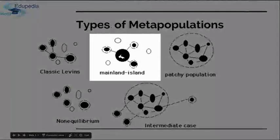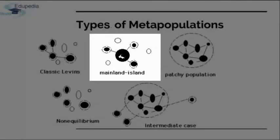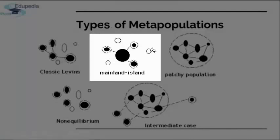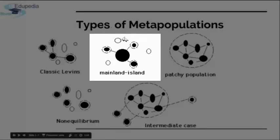The second is the mainland-island model. It represents a system of patches or subpopulations located near a large mainland patch. Dispersal from the mainland can reach each of the smaller subpopulations. It is assumed the mainland population does not go extinct, and if the mainland does not go extinct, neither does the metapopulation. Essentially, the large mainland population supplies surrounding metapopulations with surplus individuals, so none go extinct.